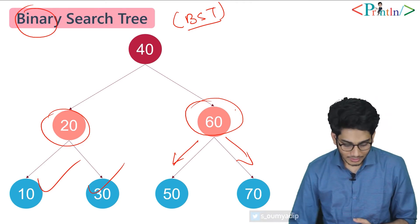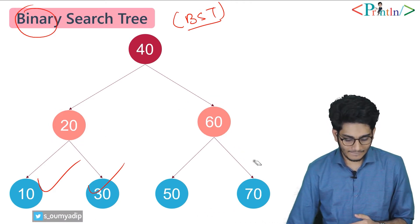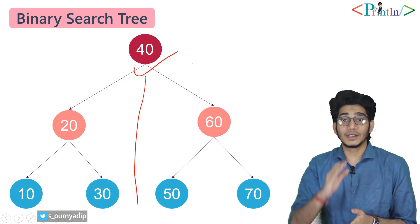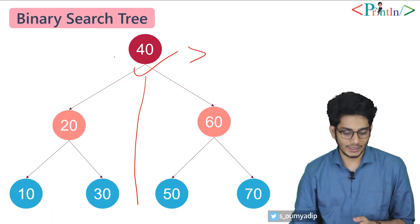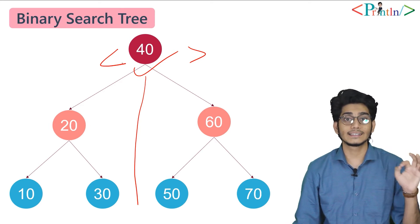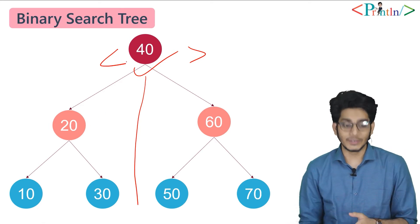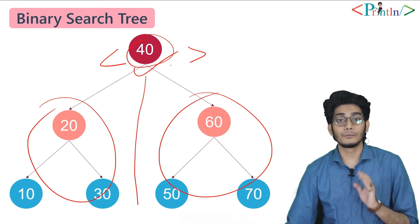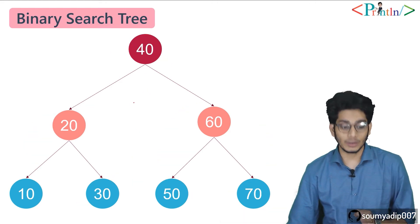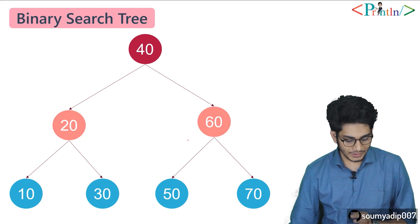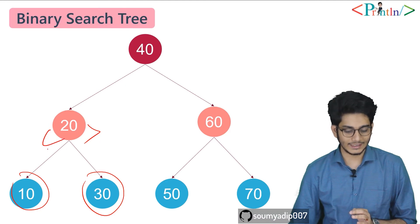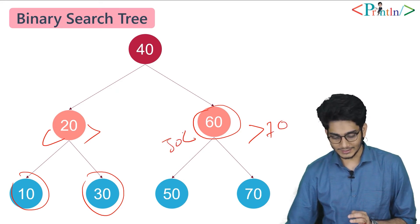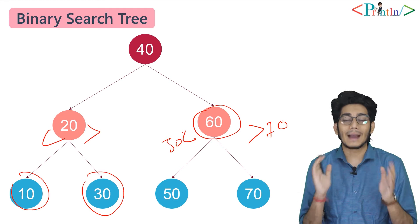You can see that the root is 40. All the values on the right-hand side are greater than 40, and all the values on the left-hand side are less than 40. So the left subtree will be lesser than the root node and the right subtree will be greater than the root node. For example, for node 20: 30 is greater than 20 and 10 is less than 20. For node 60: 70 is greater than 60 and 50 is less than 60.